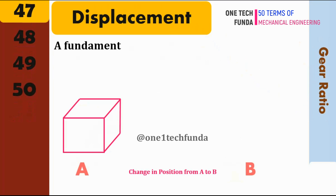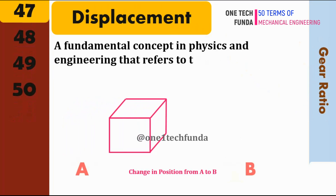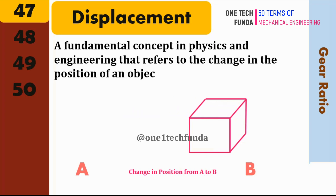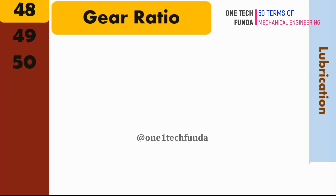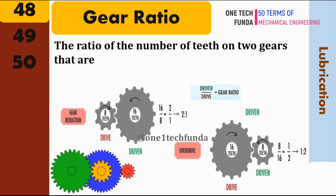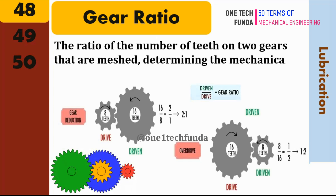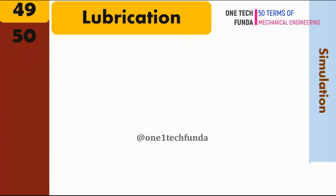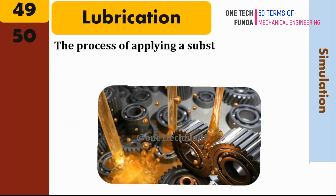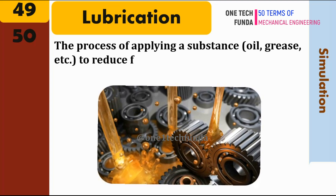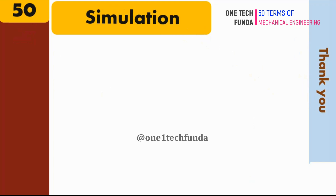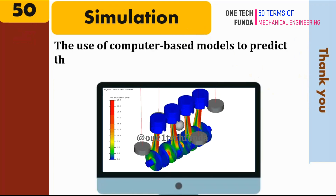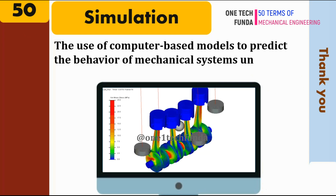Displacement: a fundamental concept in physics and engineering that refers to the change in the position of an object. Gear Ratio: the ratio of the number of teeth on two gears that are meshed, determining the mechanical advantage in a system. Lubrication: the process of applying a substance like oil, grease, etc. to reduce friction and wear between mechanical parts. Simulation: the use of computer-based models to predict the behavior of mechanical systems under different conditions.